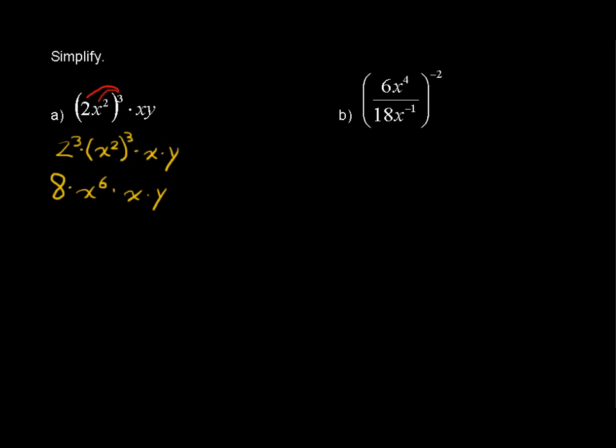This x has an exponent of 1. Whenever anything does not have an exponent, you can think of it as having an exponent of 1. It's implied there. So when we multiply like bases, we're going to add these exponents. The 6 and the 1 will get added.